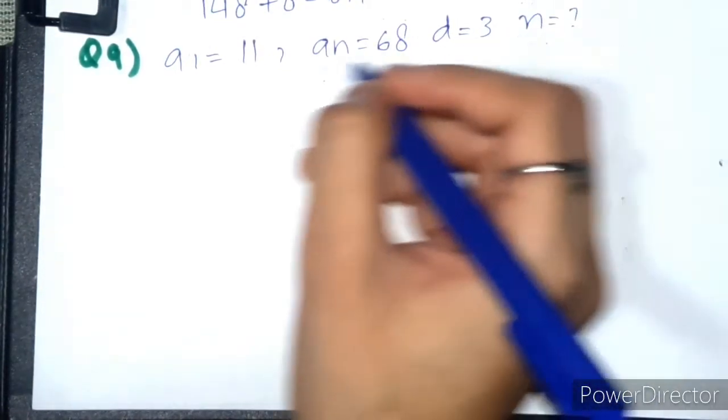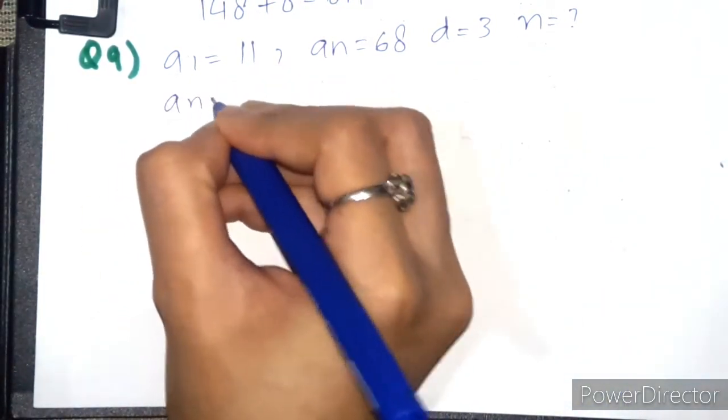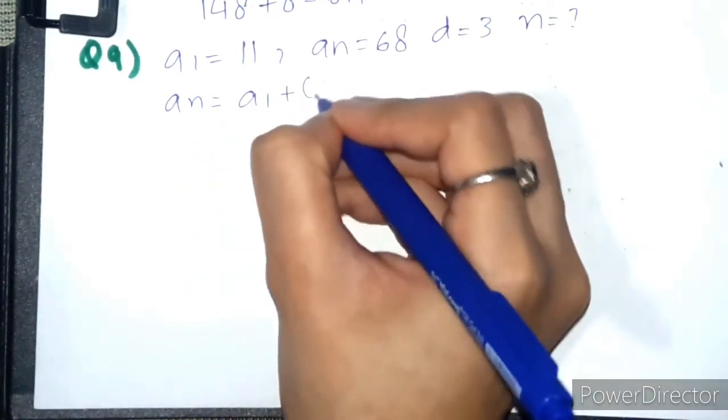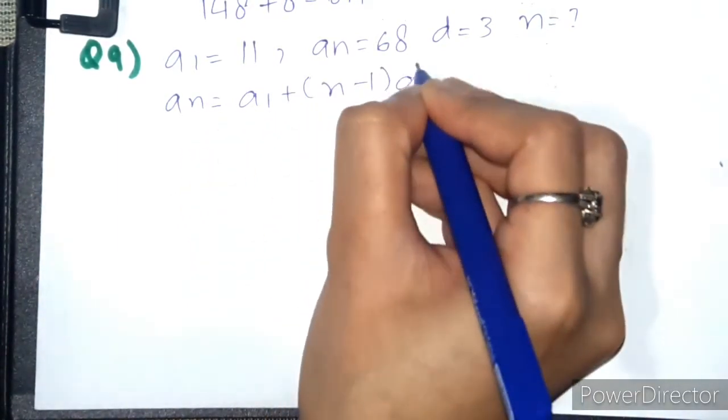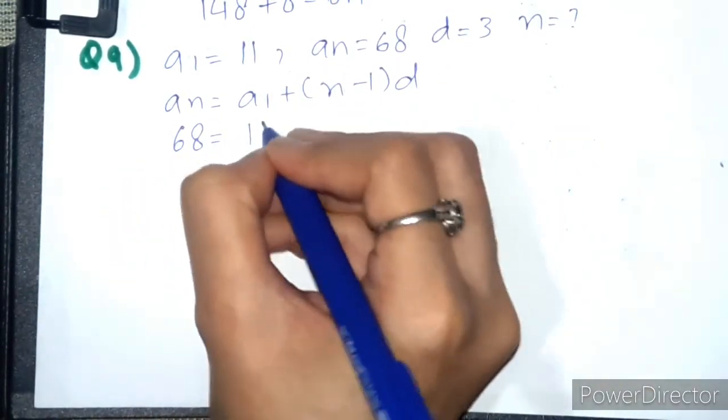Same like question number 6, we will solve it using the formula an = a1 + (n - 1) × d. Substituting the values: 68 = 11 + (n - 1) × 3.